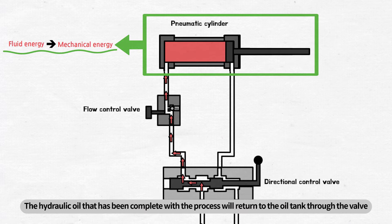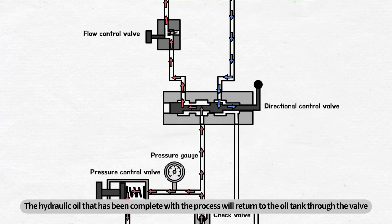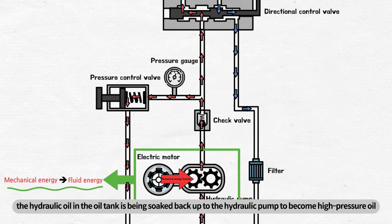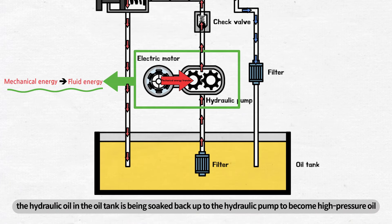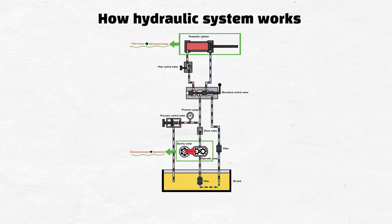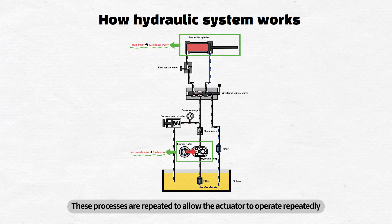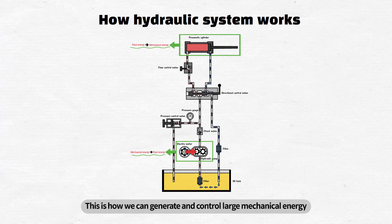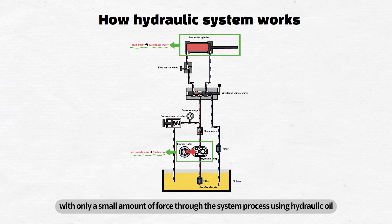The hydraulic oil that has completed the process will return to the oil tank through the valve. Then, the hydraulic oil in the oil tank is soaked back up to the hydraulic pump to become high-pressure oil. These processes are repeated to allow the actuator to operate repeatedly. This is how we can generate and control large mechanical energy with only a small amount of force through the system process using hydraulic oil.